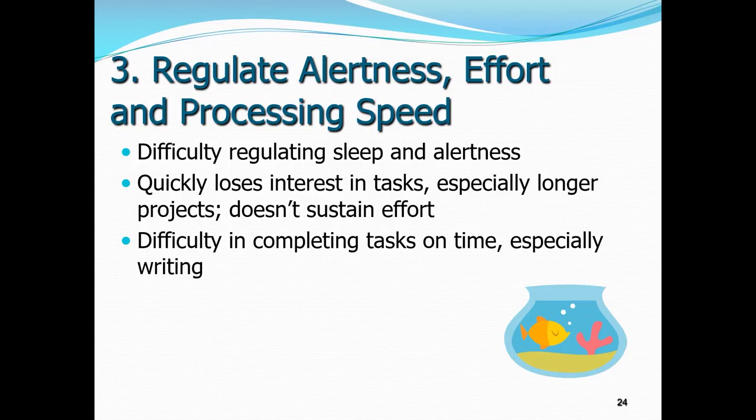The frontal lobe also regulates alertness, effort and processing speed. With ADHD, sleep is often quite poor — they usually have less need for a long period of sleep, but adequate sleep is still really important, so good sleep routines and sleep hygiene matter. Trying to switch off a busy brain is really difficult. Processing speed is usually below average in cognitive assessments — they take longer to process an instruction and need a longer period of time to respond, or may need things repeated. This can mean they lose interest in long tasks quickly and have difficulty completing tasks on time.